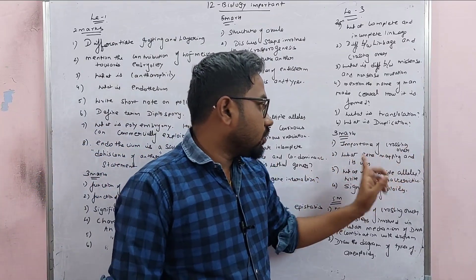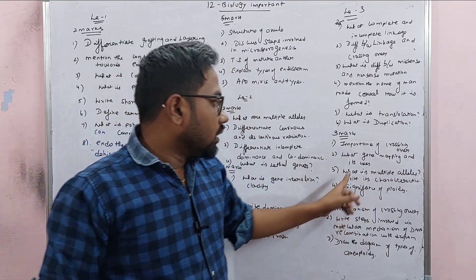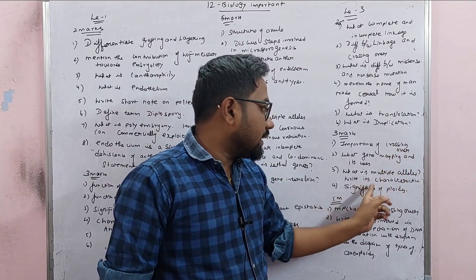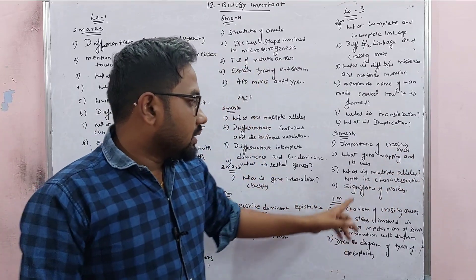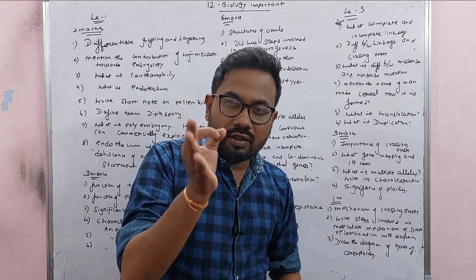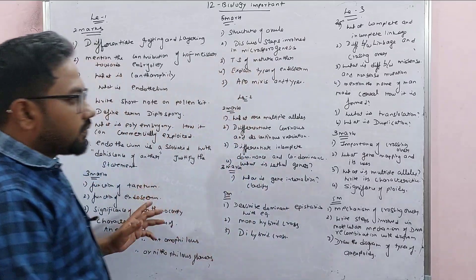What is gene mapping and uses? 3 mark, confirm. Multiple alleles, write its characteristics. This is 3 mark. Significance of ploidy, very very important. All of these are very very important 3 mark.